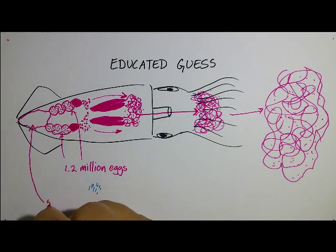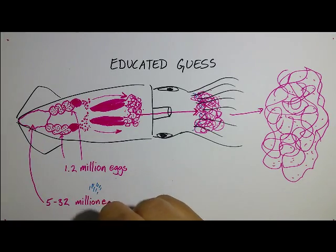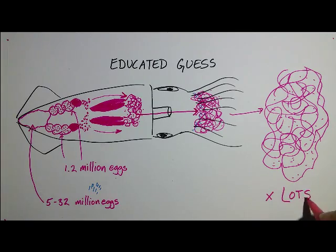As for the ovary, it can contain millions more unripe eggs, so one mom could make quite a few egg masses.